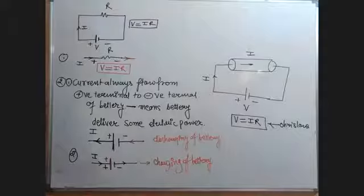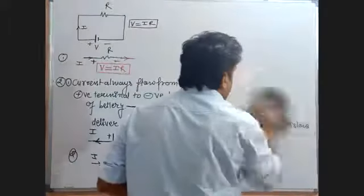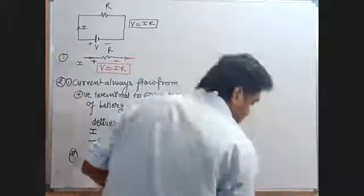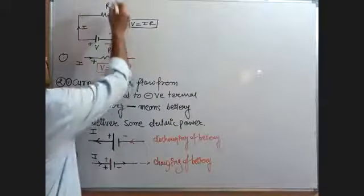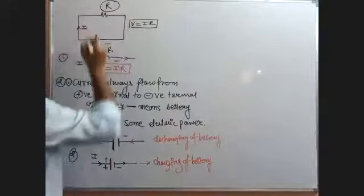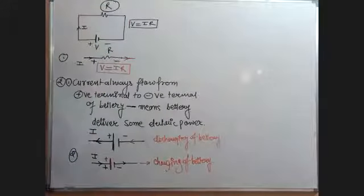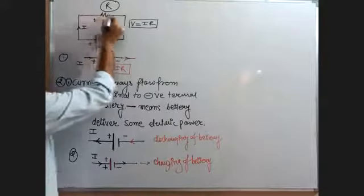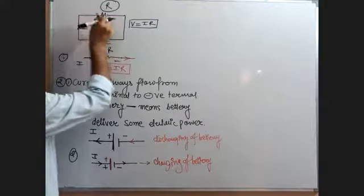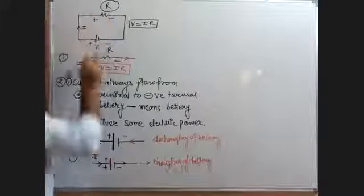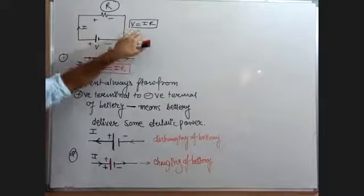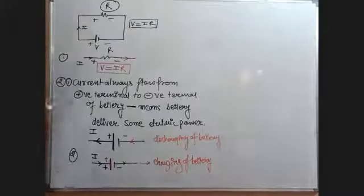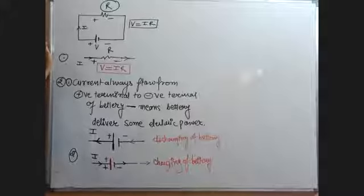R is the property of a conductor due to which it opposes the flow of current. Whenever it opposes, a voltage difference is automatically developed across the resistance, which is equal to the applied voltage — that is, V equals IR. Please write down all these concepts.